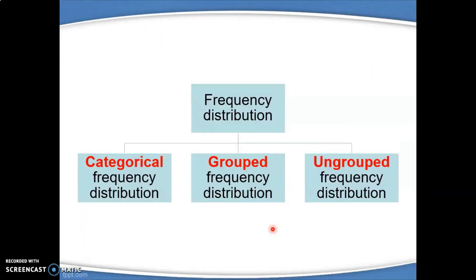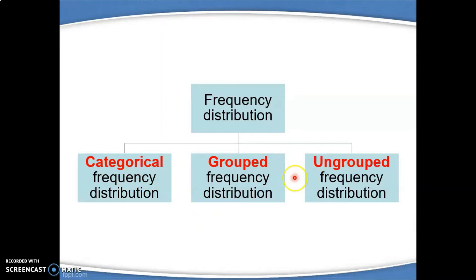There are 3 types of frequency distributions, which are categorical, grouped, and ungrouped. Let us see them one by one.